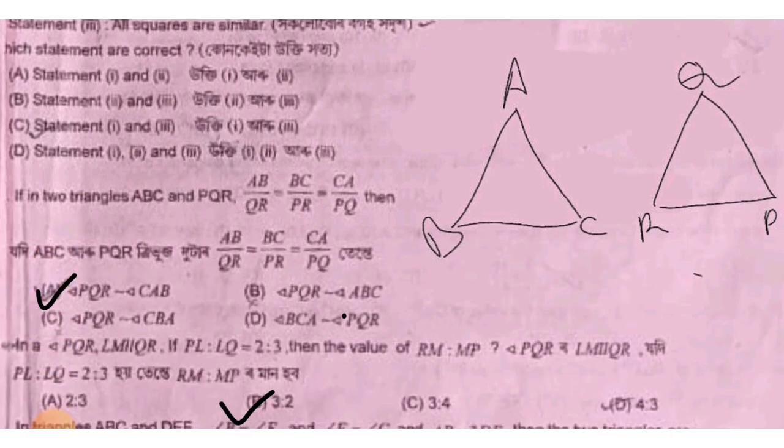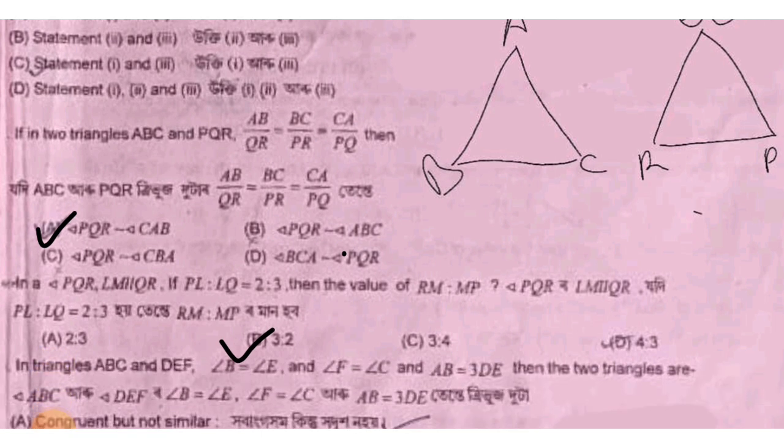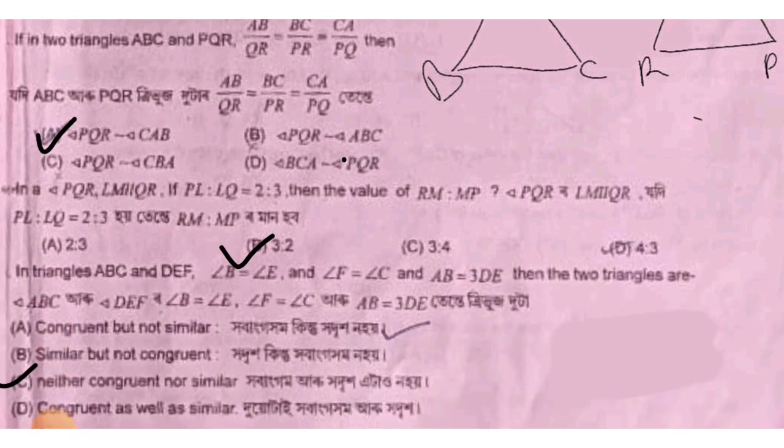Next question: Given triangle with sides, ab by qr, bc by pr, and ac by pq. The target is to find the value of pq times qr times pr. Option is selected.